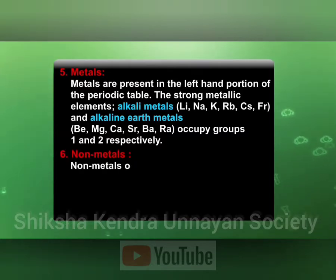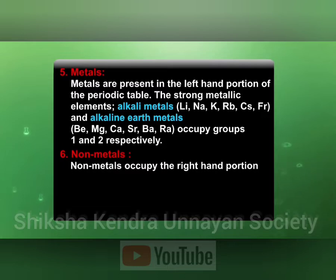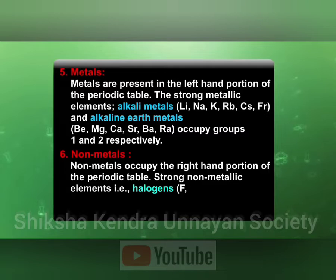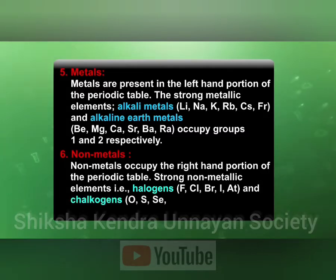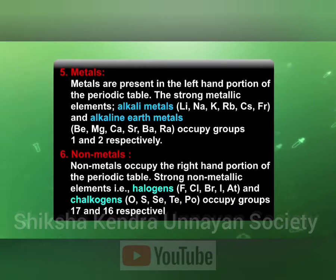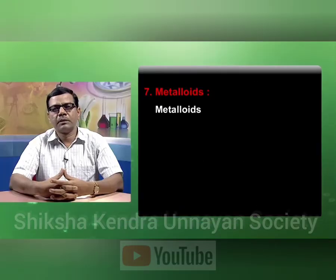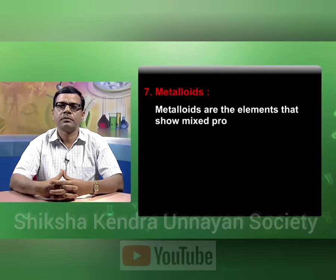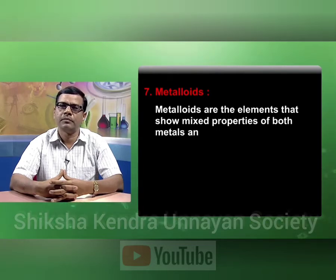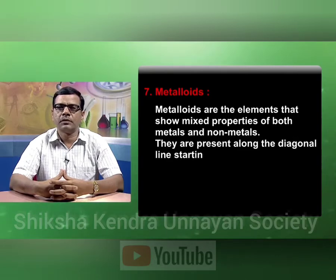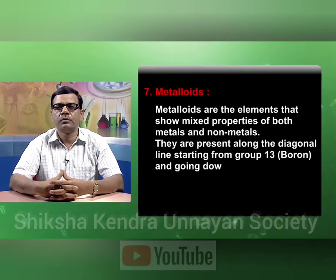Nonmetals occupy the right-hand position of the periodic table. Strong nonmetallic elements — halogens: fluorine, chlorine, bromine, iodine, astatine — and the chalcogens: oxygen, sulfur, selenium, tellurium, polonium — occupy groups 17 and 16 respectively. The metalloids are the elements that show mixed properties of both metals and nonmetals. They are present along the diagonal line starting from group 13 boron and going down to group 16 polonium.